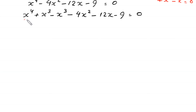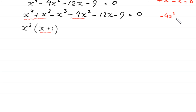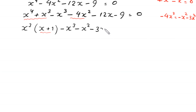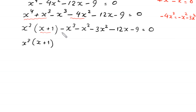From the first two terms x⁴ + x³, we factor out x³ to get x³(x + 1). To match the (x + 1) factor, we rewrite -4x² as -x² - 3x², keeping -x³ in place. This gives -x³ - x² - 3x² + 12x - 9 = 0.